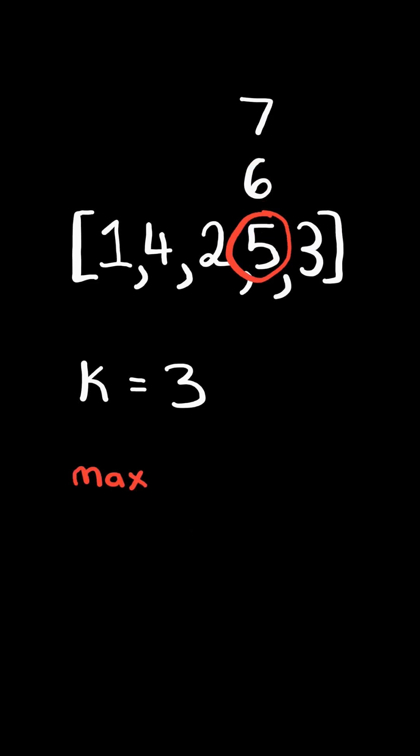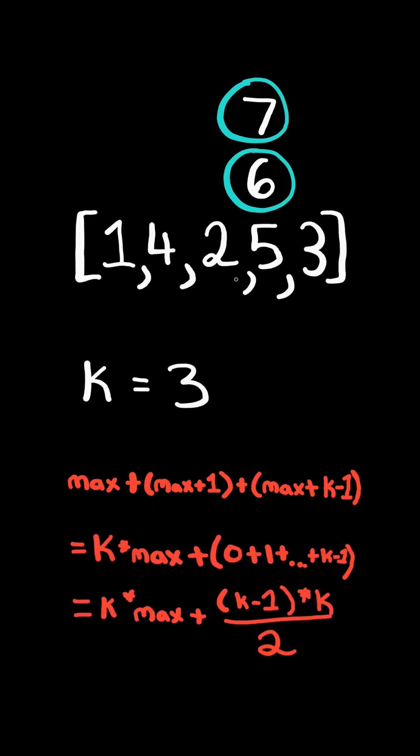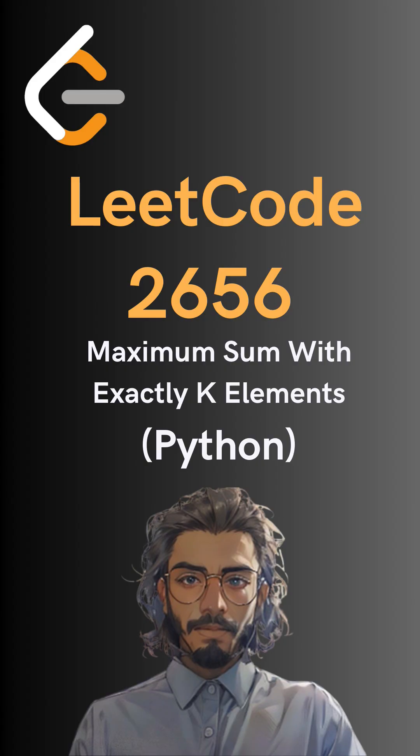So we need to find the max and add to it the next k minus 1 numbers. We then split the sum into two parts and convert the second part to a closed form expression. And here's the code to do so, please like it all for more.